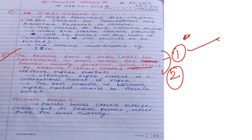The offshore rupee market is an important economic term for the Engineering Services Examination. In January and February 2019 current affairs, detailed explanations of economic terms were provided. Maximum two to three questions in ESE generally come directly from economic terms, so understanding these terms is critical.